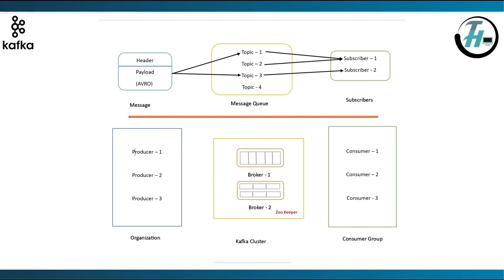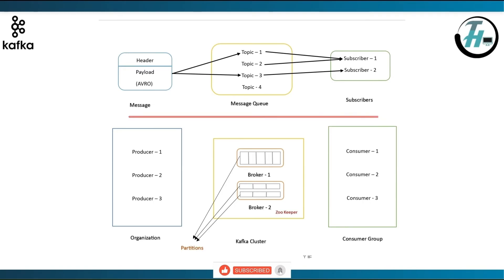The rectangular boxes in grey are the topics present and they are further divided into partitions. Both consumer groups and partitioning are used to implement scalability in Kafka. So when the vertical scaling threshold is reached, we do horizontal scaling and split data of a topic into multiple streams. We call these smaller streams partitions of that topic.